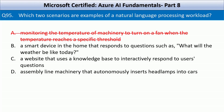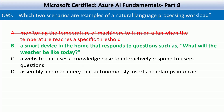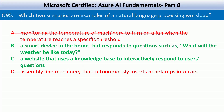A smart device in the home that responds to questions such as 'what will the weather be like today?' involves understanding and responding to human speech or text. This will likely use speech to text, language understanding, and language generation, making it a classic example of NLP. A website that uses a knowledge base to interactively respond to user questions is a text-based interface that understands user queries and provides relevant responses — it uses question answering, language understanding, or chatbot capabilities, all of which fall under NLP. Assembly line machinery that autonomously inserts headlamps into cars is robotics or industrial automation involving mechanical tasks, not language, making it an incorrect choice.